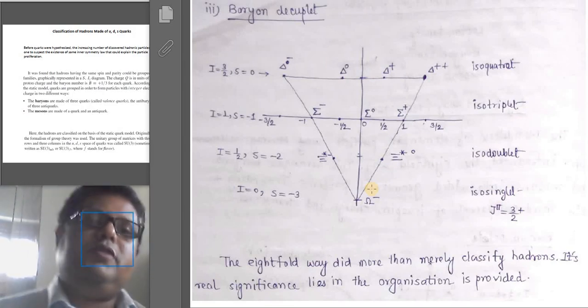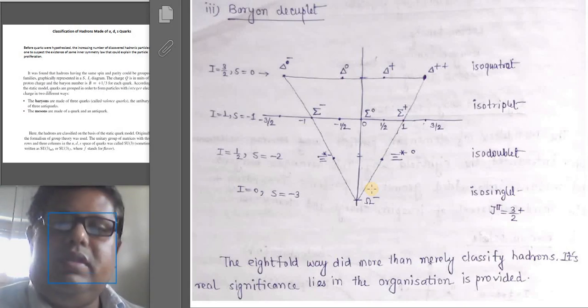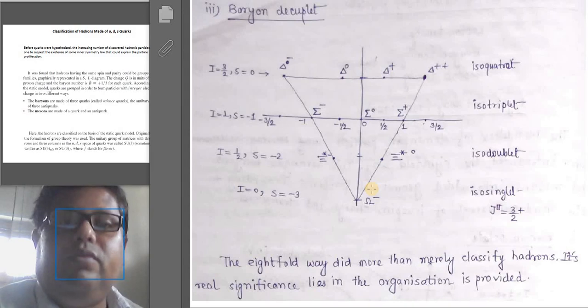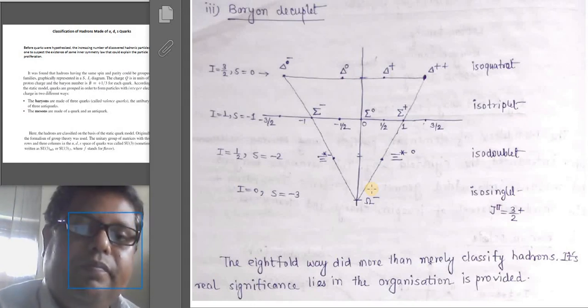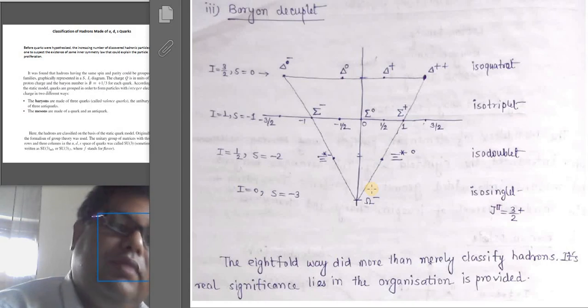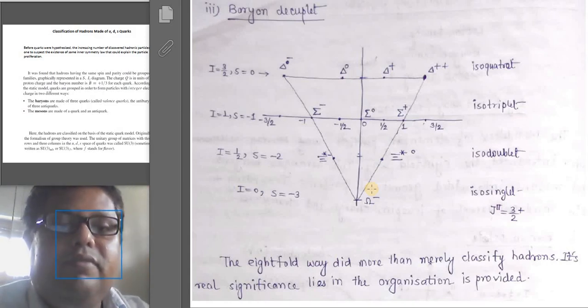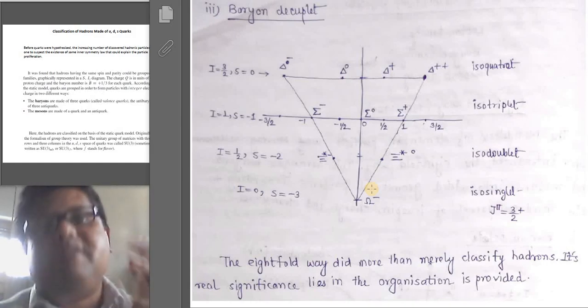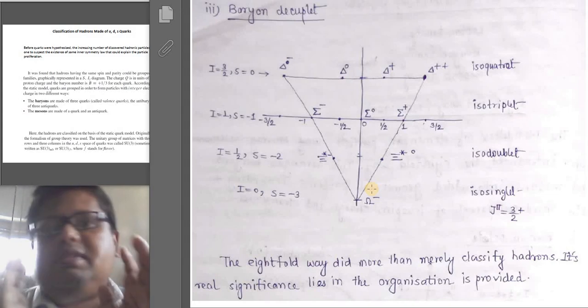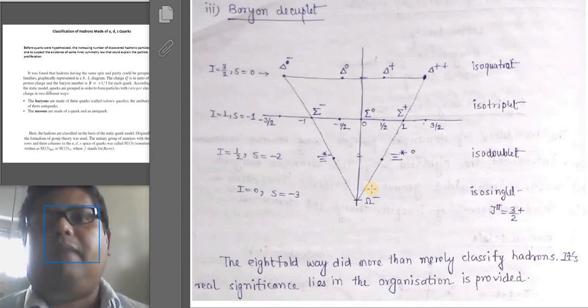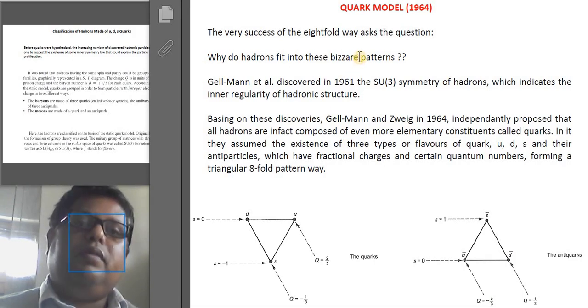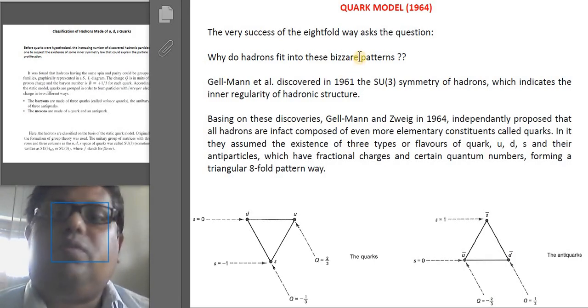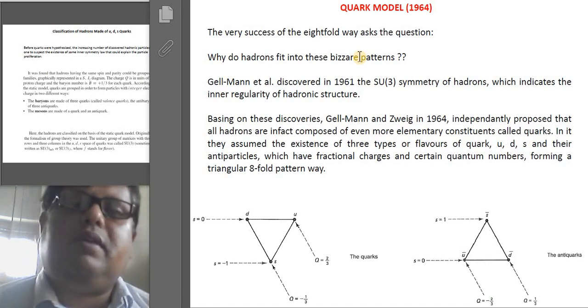Now you must be thinking, so what do we get from all these things? Well, this Eightfold Way, this mere arranging, did way more than simply classify the hadrons. What is more interesting is that they really give significance to the fact that we can arrange them like that. This means there is something interesting involved, and what happened after that is that they started asking questions: why do these hadrons fit into these bizarre patterns?